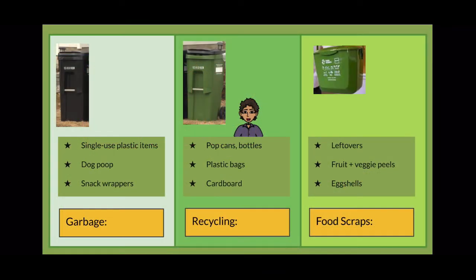For garbage, we have single-use plastic items, dog waste, and snack wrappers. Keep in mind the single-use plastic items. They can be things like your plastic utensils. For recycling, we have pop cans, bottles, plastic bags, and cardboard.